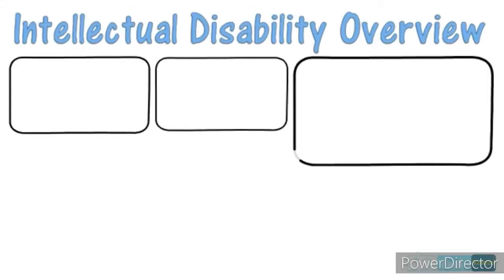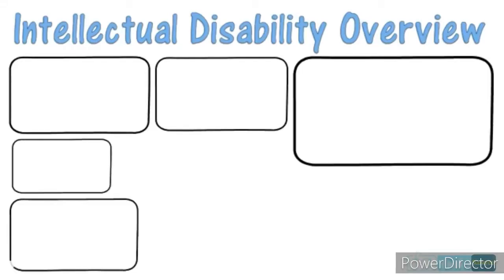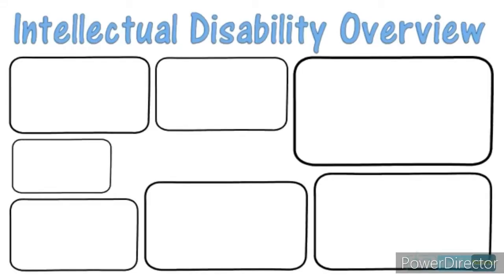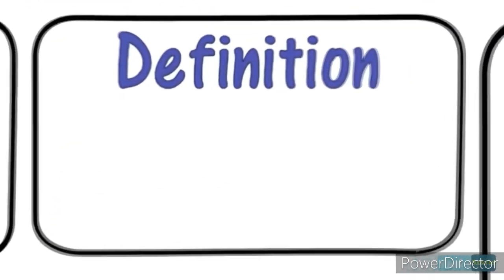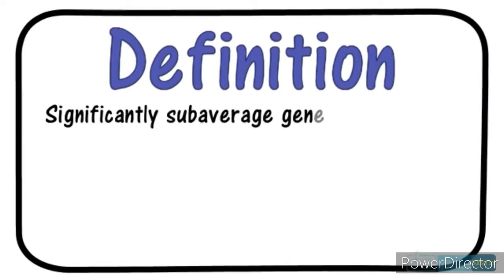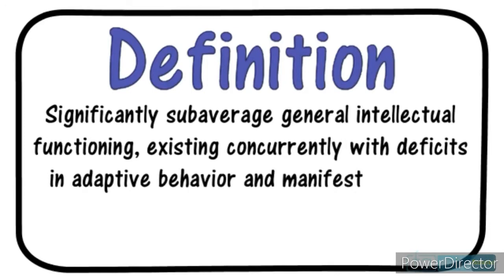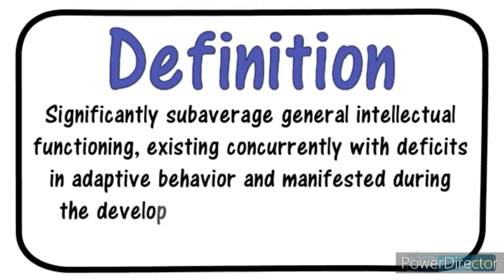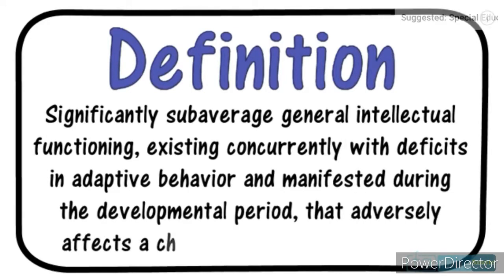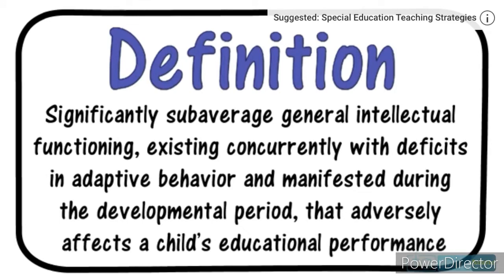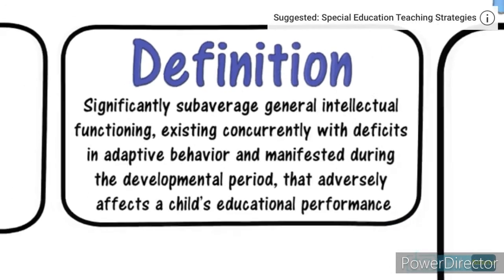This video will cover several important topics and concepts associated with intellectual disabilities. Let's begin with a quick look at the definition of intellectual disability. It is described as significantly sub-average general intellectual functioning existing concurrently with deficits in adaptive behavior and manifested during the developmental period that adversely affects a child's educational performance.